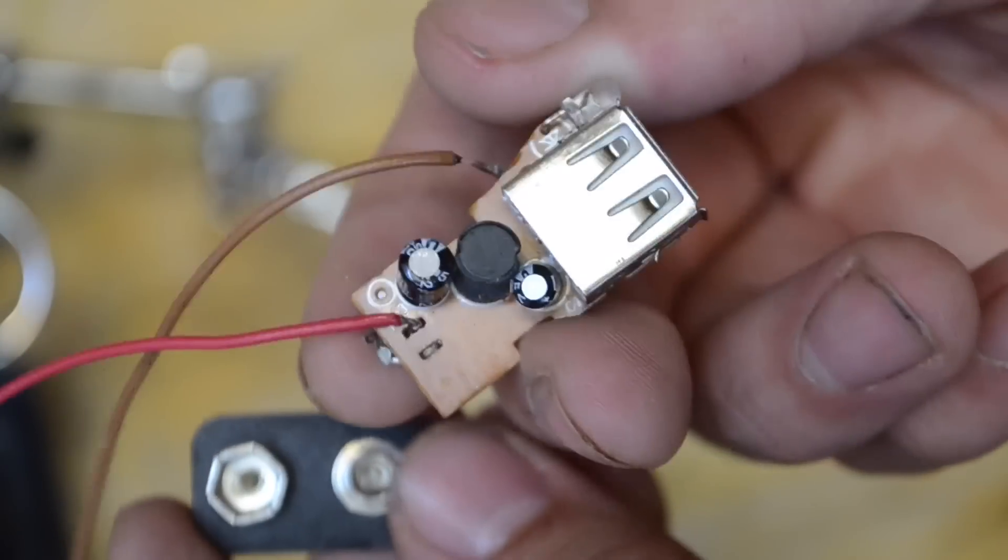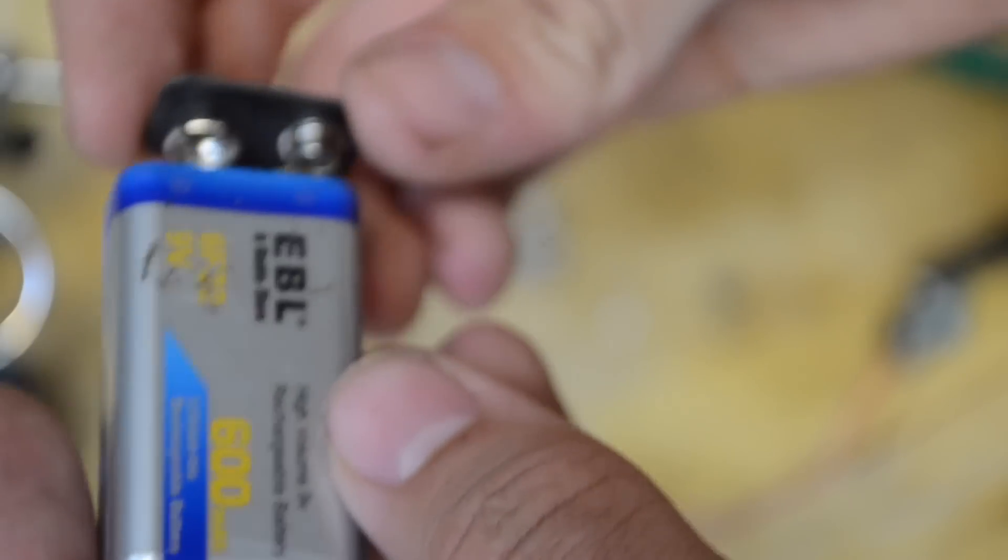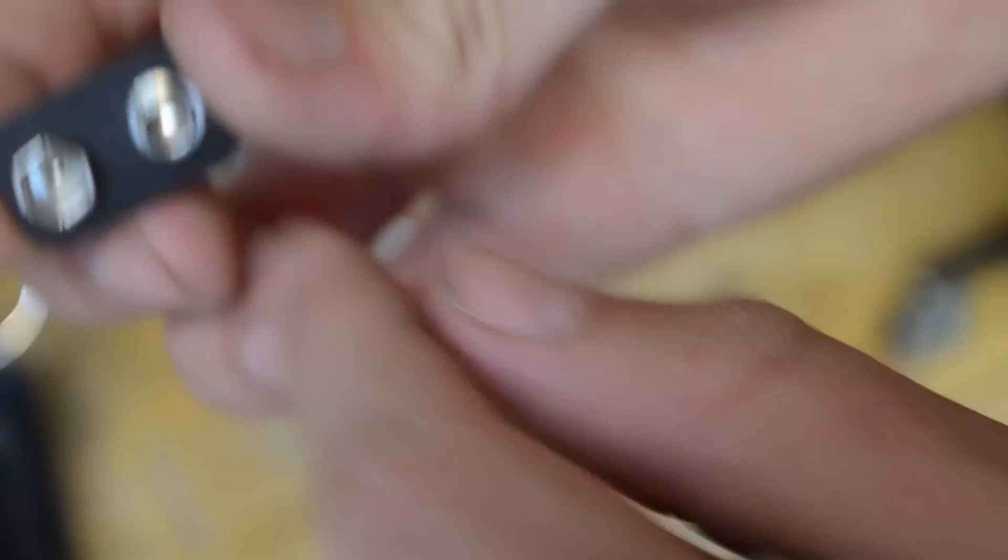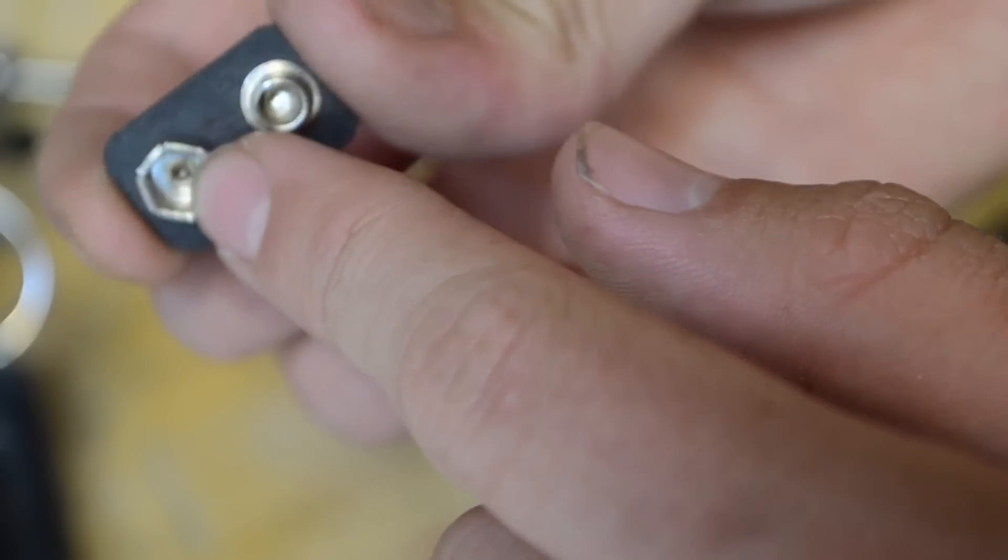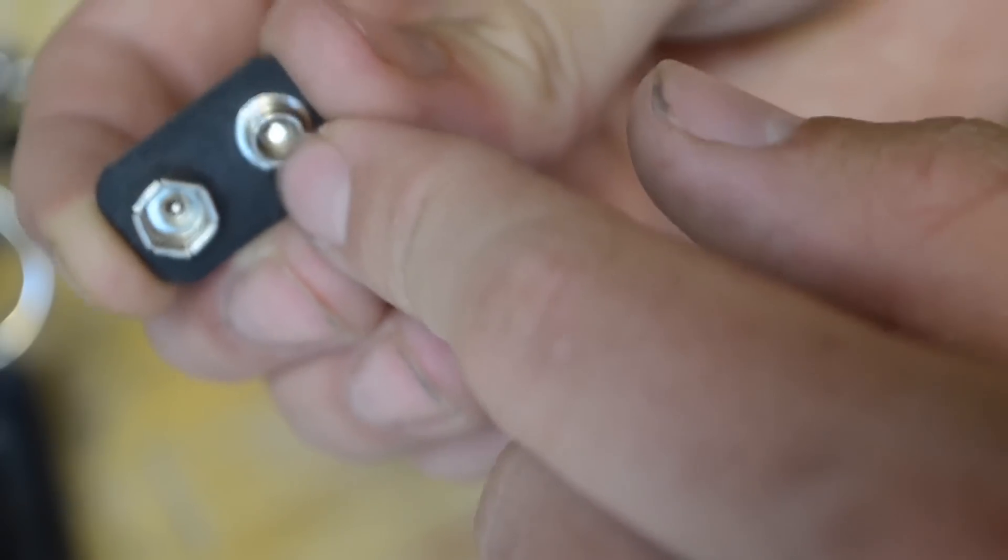Now we're going to go ahead and solder the wires from this onto this. Remember when we solder, however, that a 9 volt battery fits in like this. Meaning, the side that's normally negative is going to become positive, and the side that's normally positive is going to become negative.